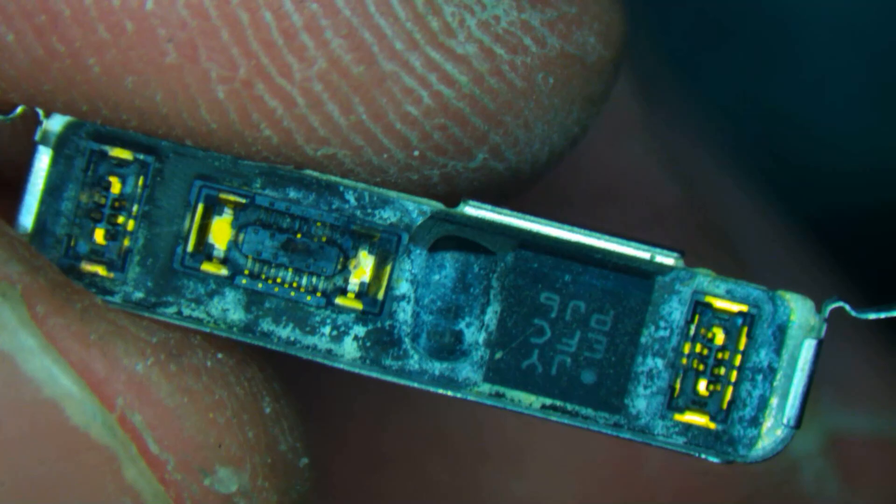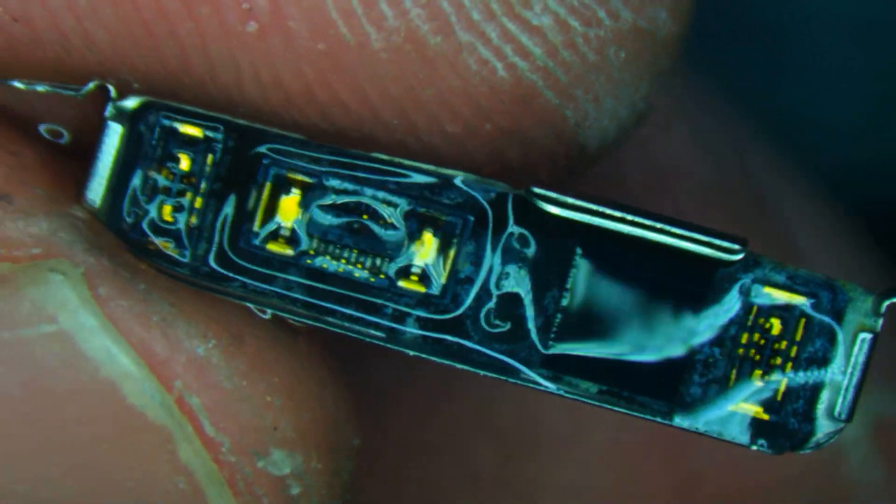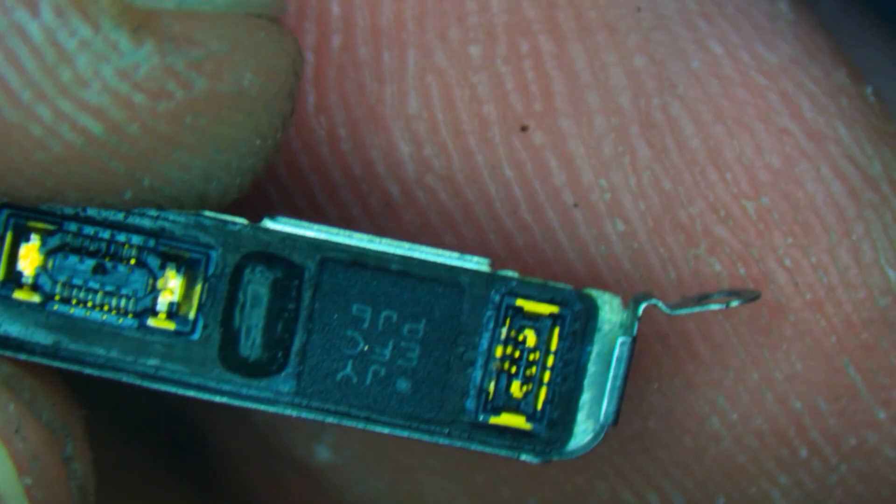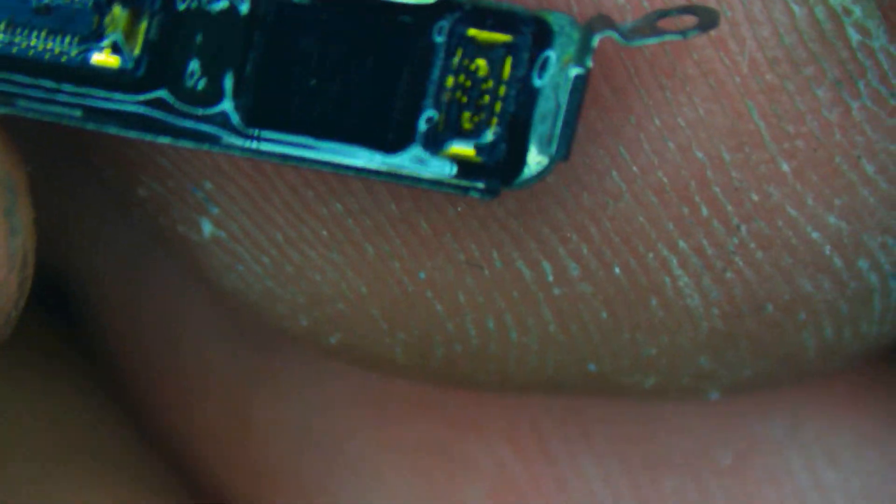Let's see how this cleans up. Add some isopropyl alcohol, take the big brush first, scrub it down. Add some more, and we'll go in with the fiberglass brush. Some of these connectors are going to need a little bit more attention, but for the most part they look like they'll at least work.